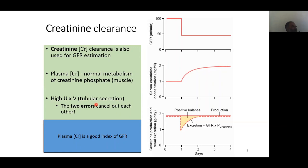Now, if you put this into the clearance equation: the creatinine in urine includes secreted creatinine, so U×V for creatinine is falsely elevated. But the plasma creatinine is also falsely elevated due to creatinine-like substances. These two errors cancel each other out, resulting in an appropriately accurate GFR figure. So plasma creatinine is a good index of GFR.